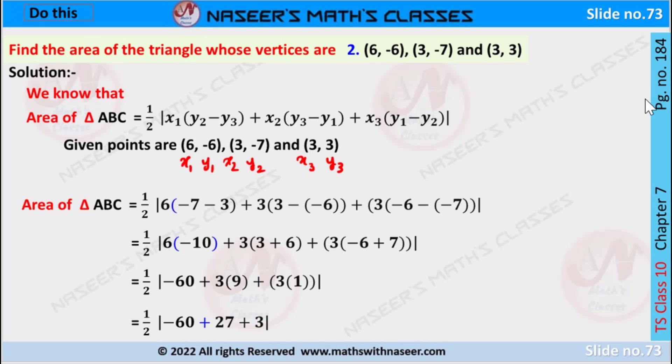Do this page number 184, chapter 7, coordinate geometry. Find the area of the triangle whose vertices are (6, -6), (3, -7), and (3, 3).